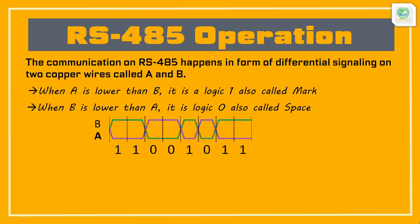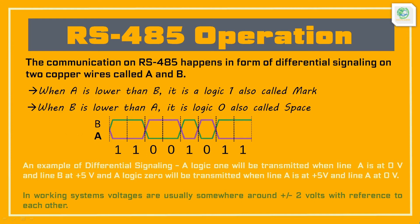Information or data transmission — which is nothing but 0s and 1s — is done in the form of electrical signals. Lines A and B are provided electrical voltages as per the data to be sent. When A is lower than B, it is logic 1, also called mark. When B is lower than A, it is logic 0, also called space. This diagram represents the signaling in RS-485, showing how the relative voltage between lines A and B decides the transmitted bit.